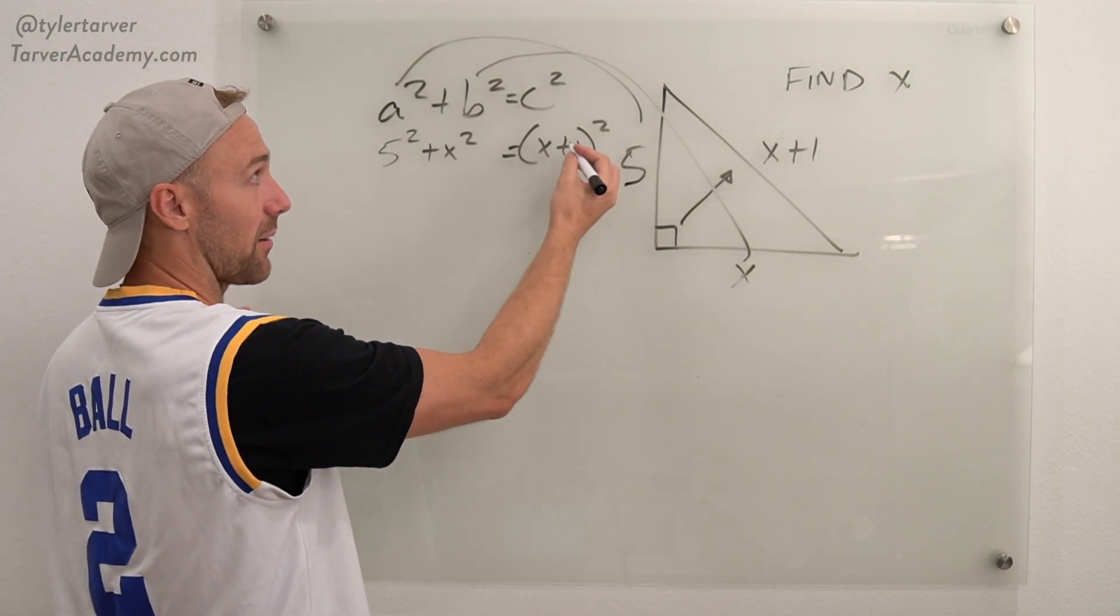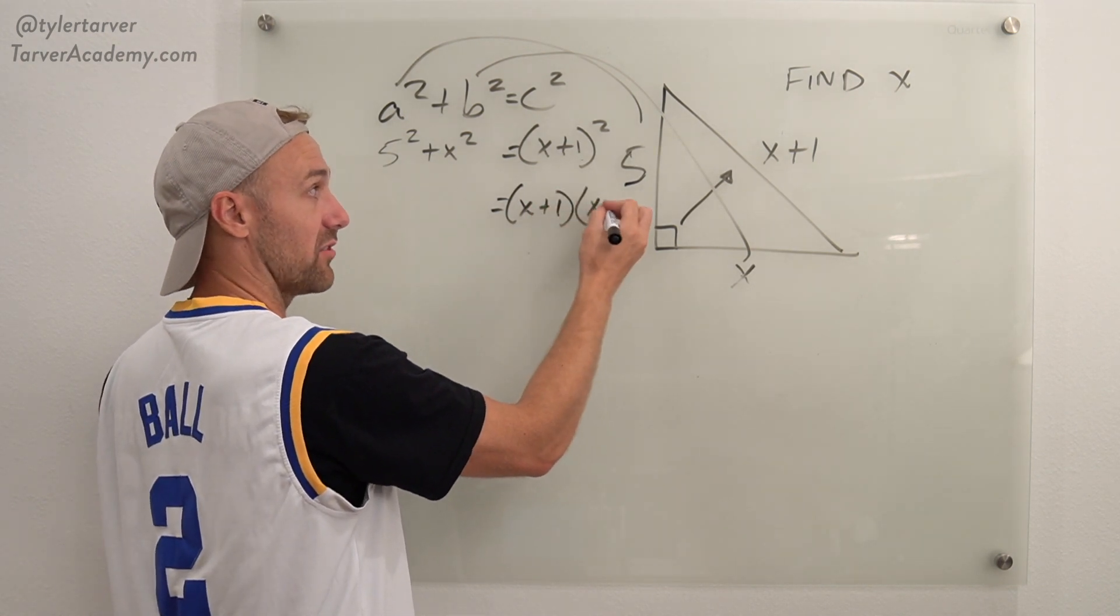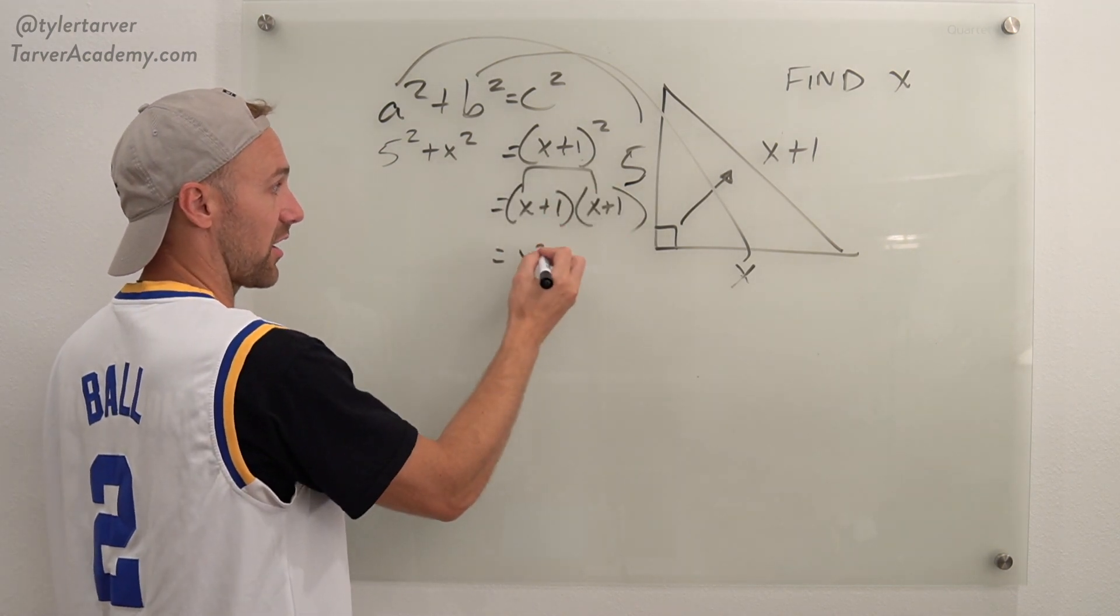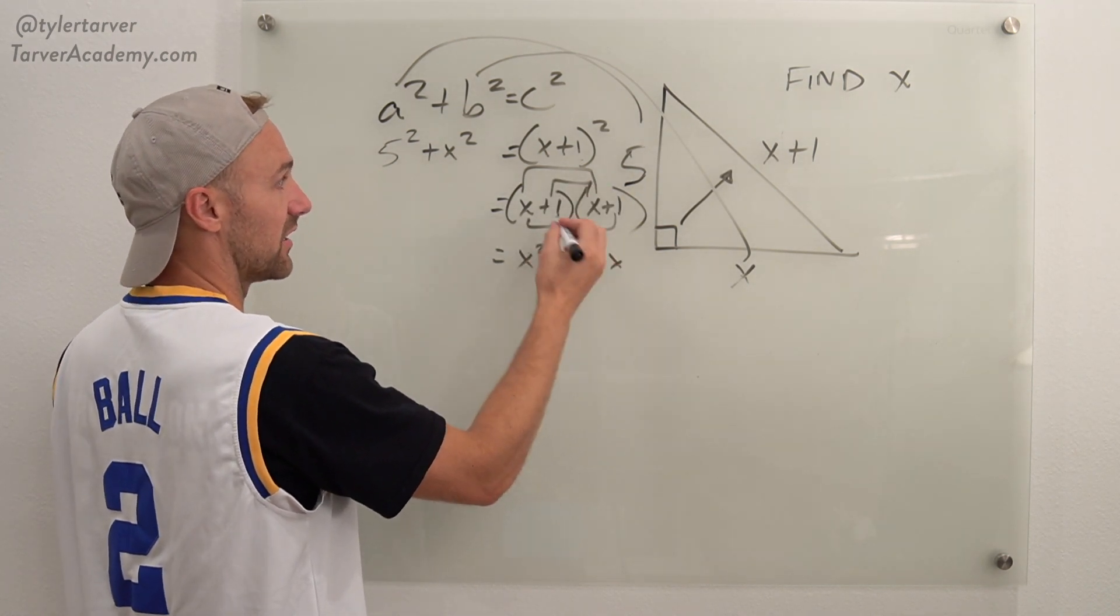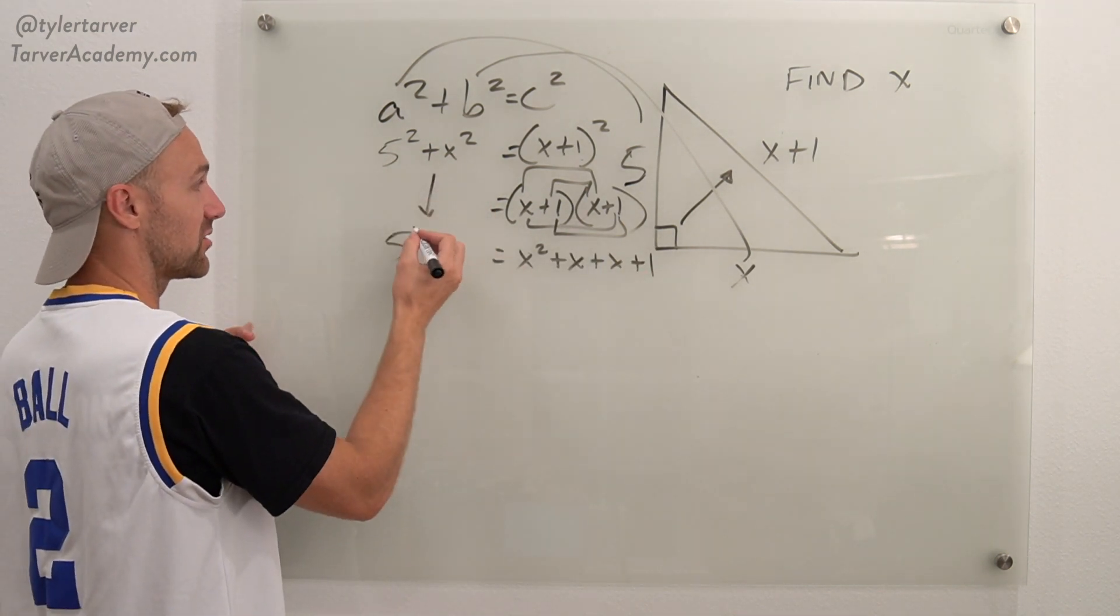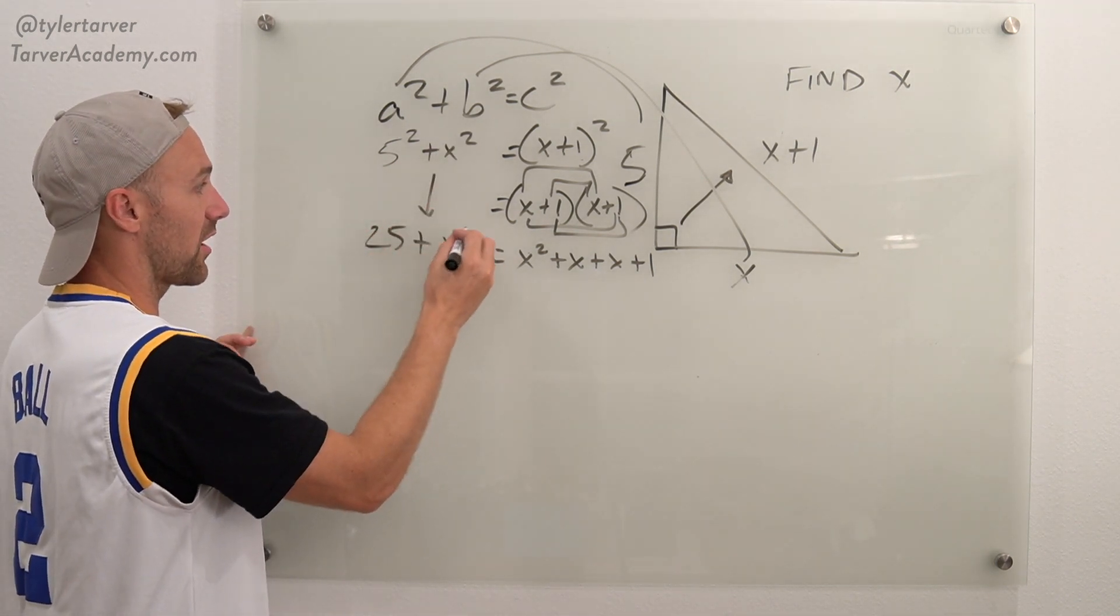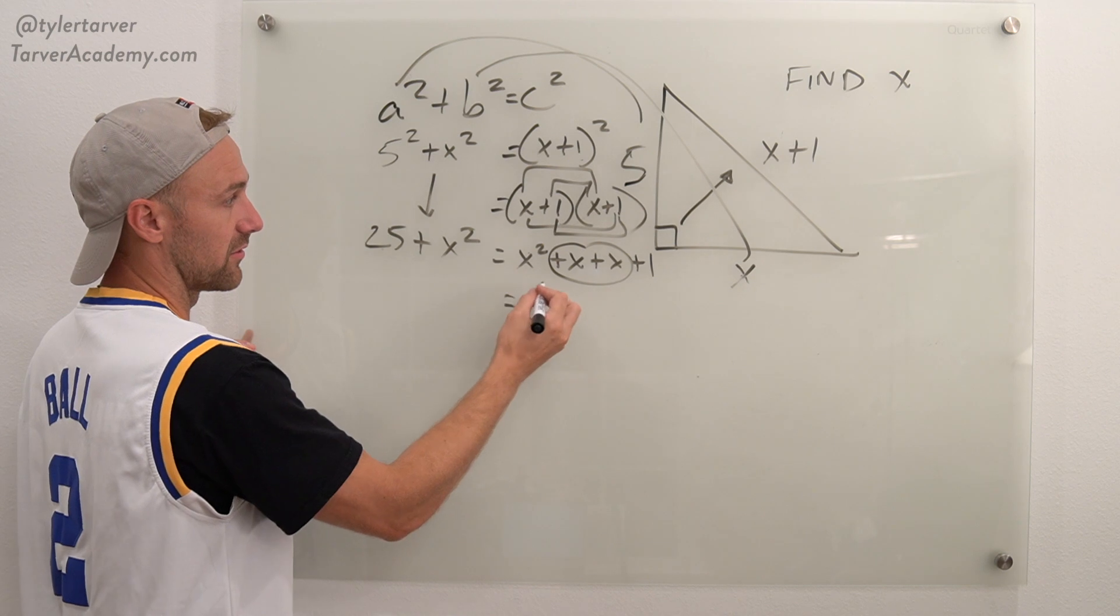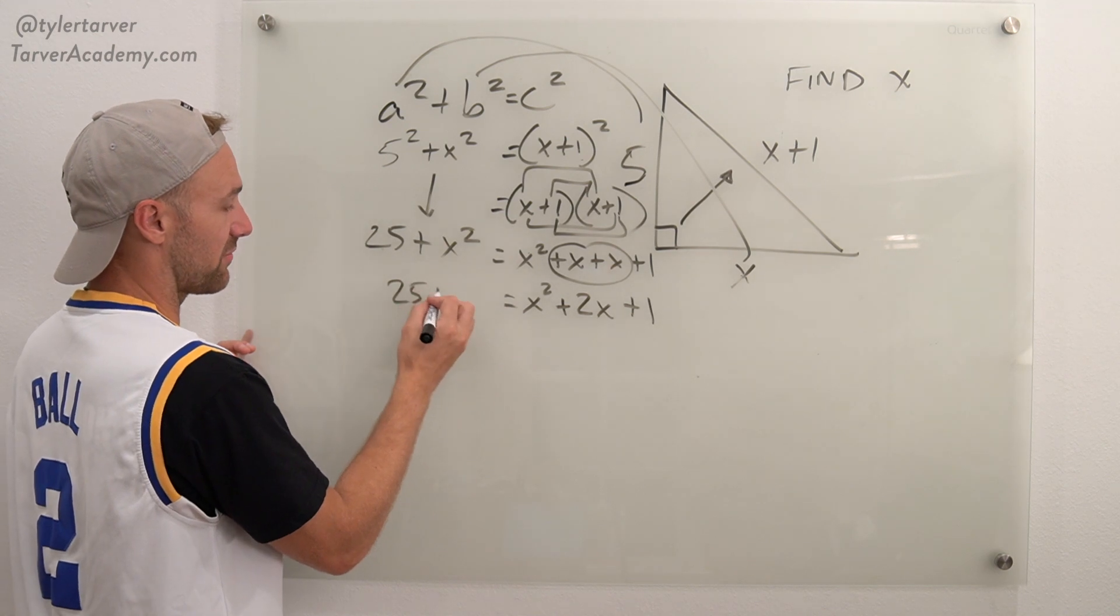So I've got to multiply x plus 1 times x plus 1, which is going to have to use the what method? Do you know? Foil. So we're doing first, x times x is x squared, outside, which is x times 1, which is plus x, inside, which is plus x, and then last, which would be 1 times 1, which is 1. I'm bringing this down, so it's 5 squared. What's 5 squared? It's 25 plus x squared. Now I can simplify this, I can add those two together, so x plus x is 2x, and then I've got 25 plus x squared.